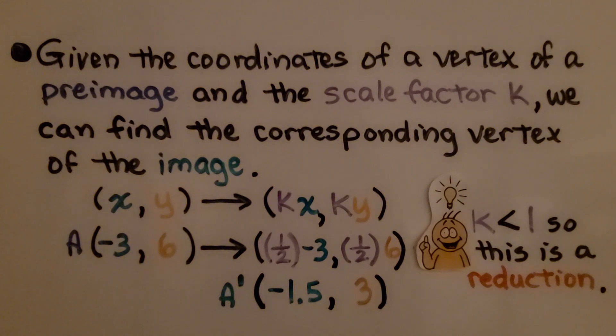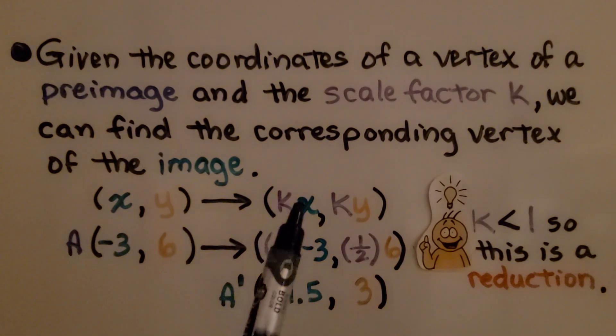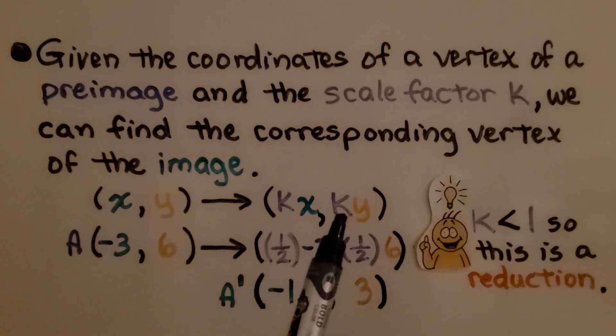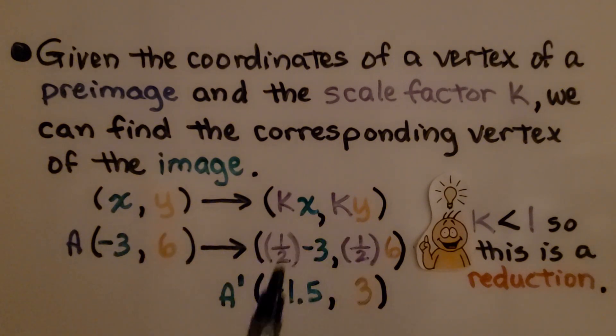Given the coordinates of a vertex of a preimage and the scale factor k, we can find the corresponding vertex of the image. We have our (x, y) value. This is going to be for the preimage vertex A. And it maps to the scale factor multiplied by the x value and the scale factor multiplied by the y value.